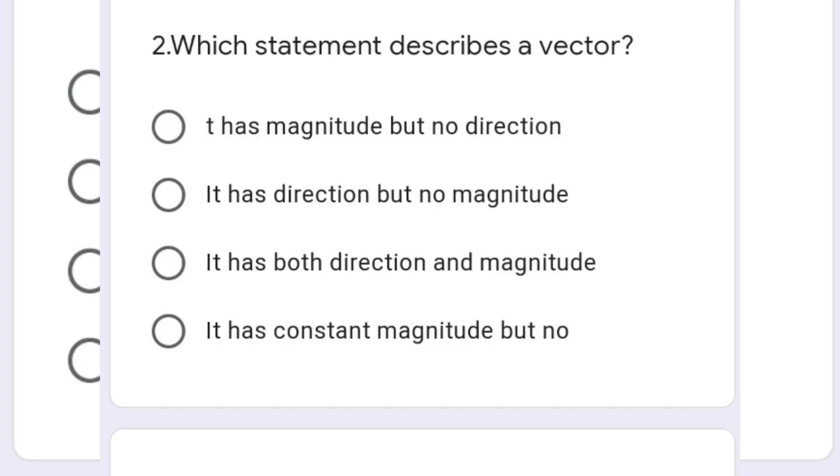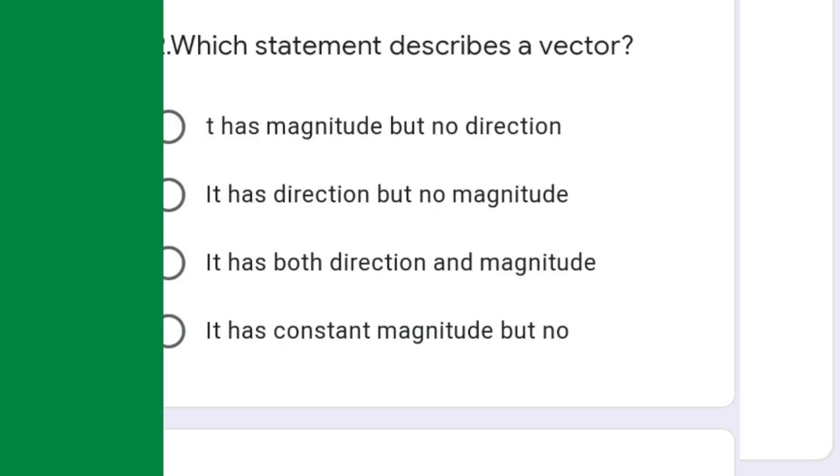These are some of the questions through which we can easily understand about scalar and vector, which is normally a difficult task for Grade 10 or IGCSE students. The first question is: which statement describes a vector? Vector means quantity which has magnitude and direction both, so here the correct answer will be the third one: it has both direction and magnitude.